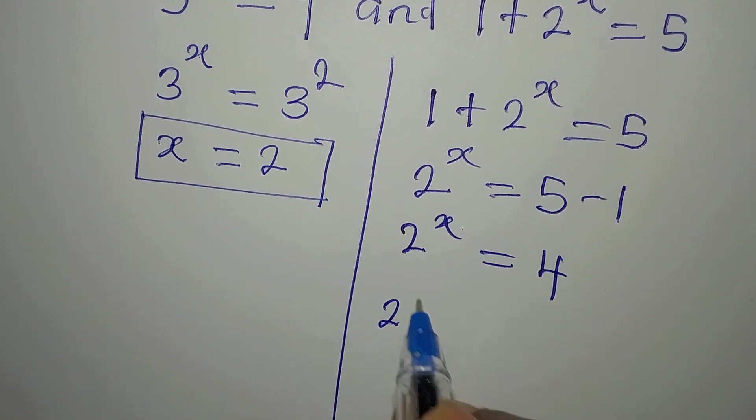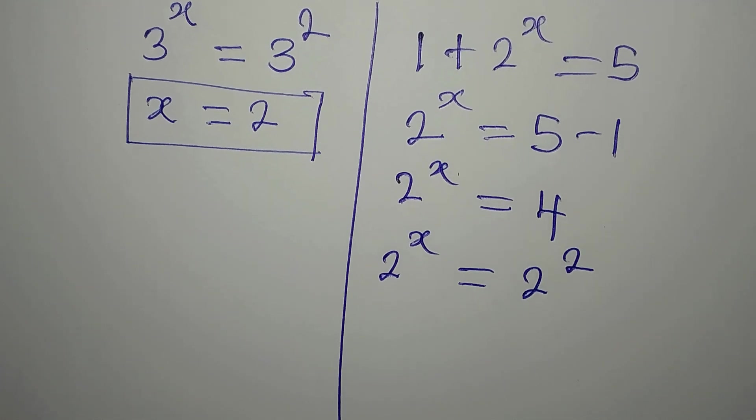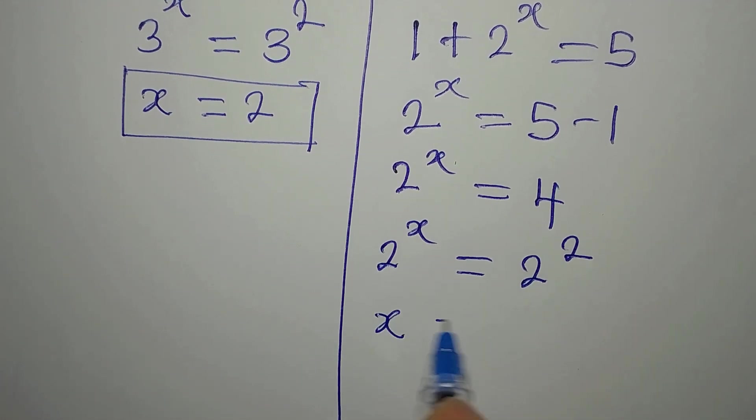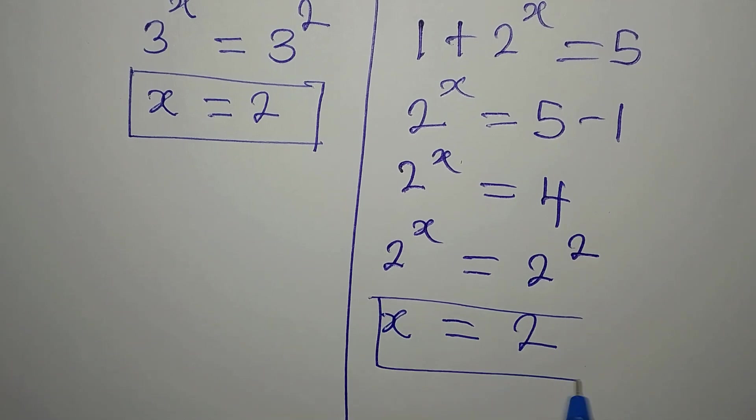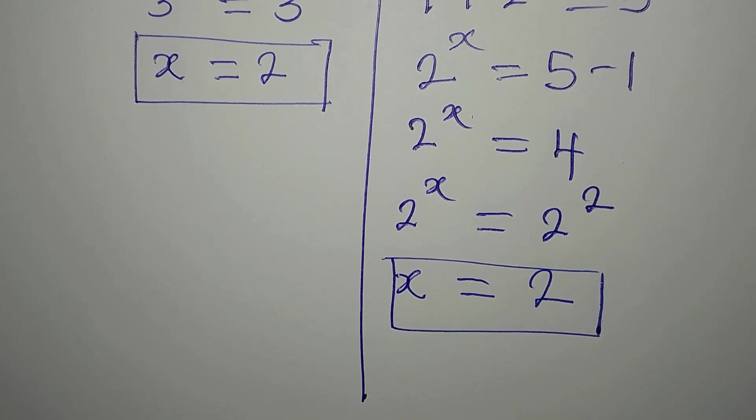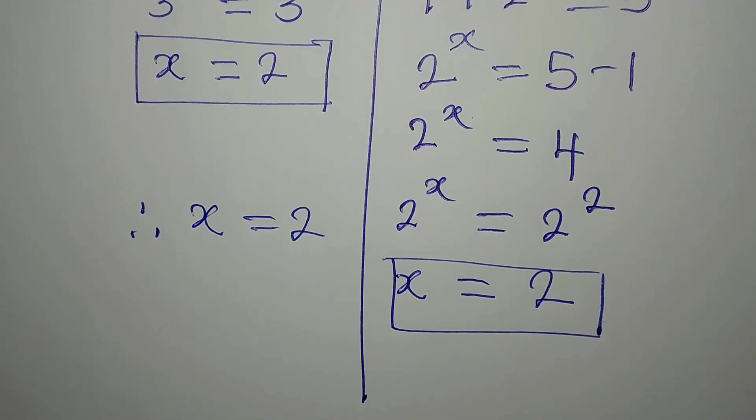Therefore, 2 to the power of x is equal to 2 to the power of 2. And from here, our x is still 2. So it is now obvious we can conclude. Therefore, the value of x is equal to 2.